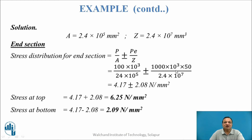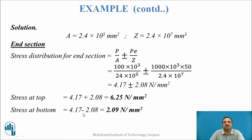Substituting the values: P/A = 4.17 N/mm² and P×e/Z = 2.08 N/mm². Stress at top = 4.17 + 2.08 = 6.25 N/mm². Stress at bottom = 4.17 − 2.08 = 2.09 N/mm².